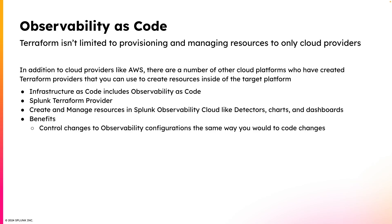Your observability configurations can be in the same repository as your code base. Think about the scenario I brought up earlier about a cloud engineer making changes to a security group — but instead of a security group, you're making changes to a detector for your production systems. It's really important to make sure the configurations of your detectors are accurate and that changes to those detectors are controlled. Because you might end up in a situation where a change was made to a detector's configuration and now the detector is not alerting when it should be, resulting in a delayed reaction to production incidents.